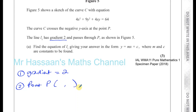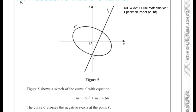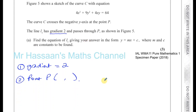We've got to find the coordinates of the point P. To find the coordinates of P, we can use the fact that P is the same point where the curve passes through the y-axis. So if we take the equation of this curve, which is 4x² + 9y² + 4xy = 64, and substitute into it...